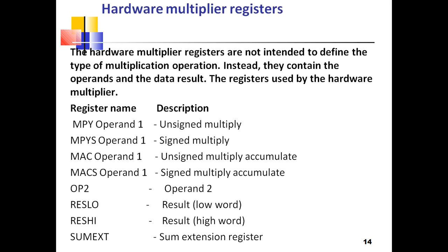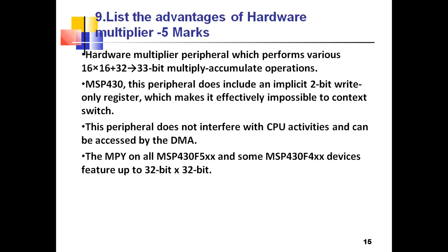The advantages of the hardware multiplier include: it supports different multiply operations like 16×16+32, providing 33-bit multiply-accumulate operations. The MSP430 hardware multiplier does not require CPU involvement while performing multiplication, so it operates efficiently and is directly accessible by the DMA. In some MSP430 F5XX and F4XX devices, it supports up to 32×32 bit multiplication.